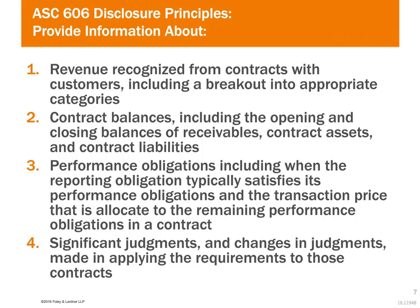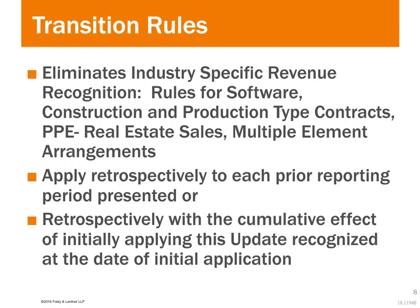Exactly. There is a full elimination of industry-specific revenue recognition rules, so those industries will have that much more work. There are two different transition methods. You can apply the full retrospective method — in 2018, you will present 2017 and 2016 as though they were following the new standard. So we're already in 2016 where you would potentially be dual-tracking revenue recognition, because we're still following Topic 605 today. But come 2018, you would have to reflect 2016 and 2017 consistent with 2018.